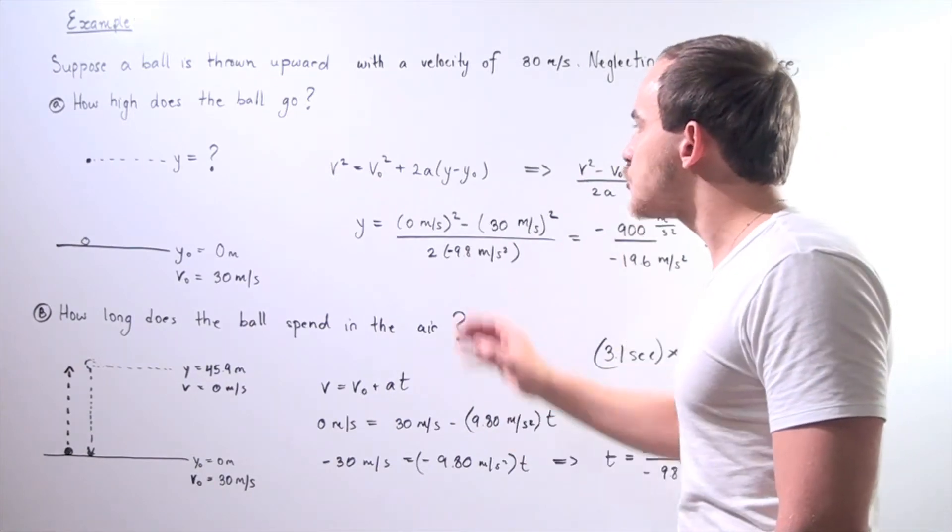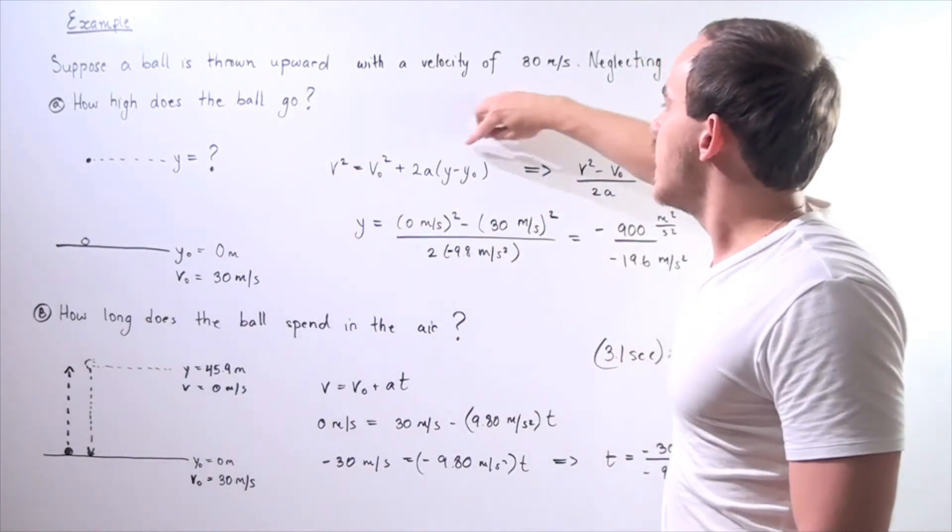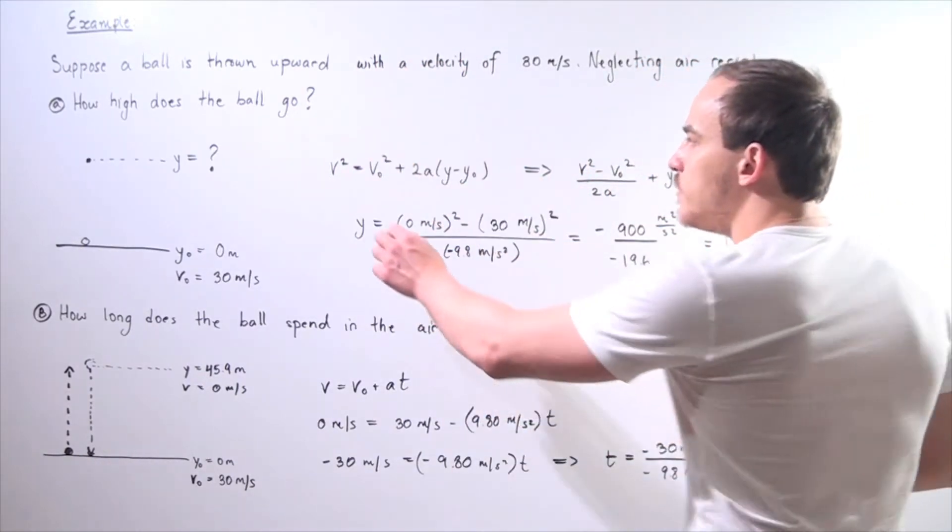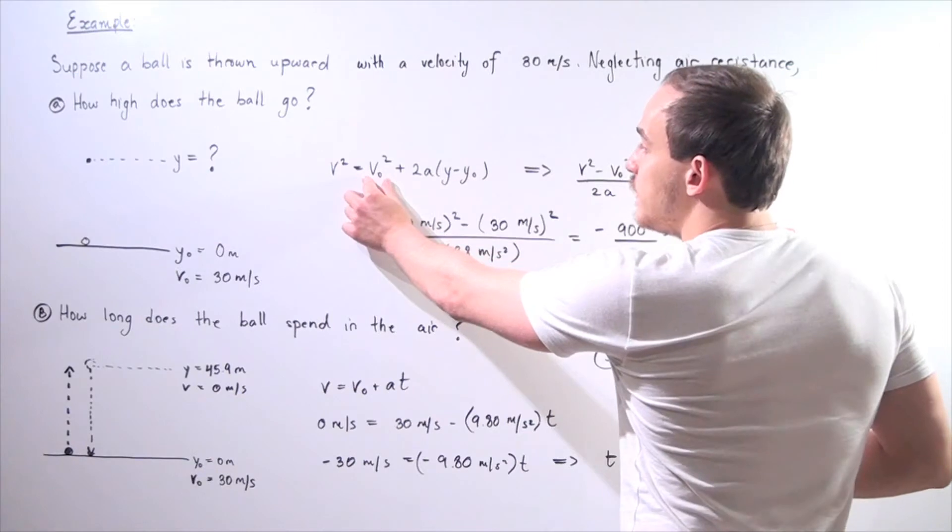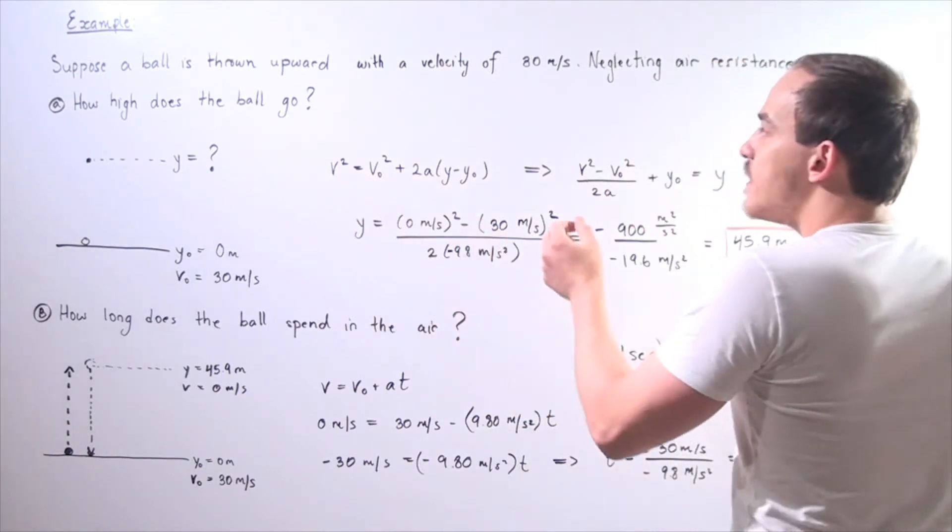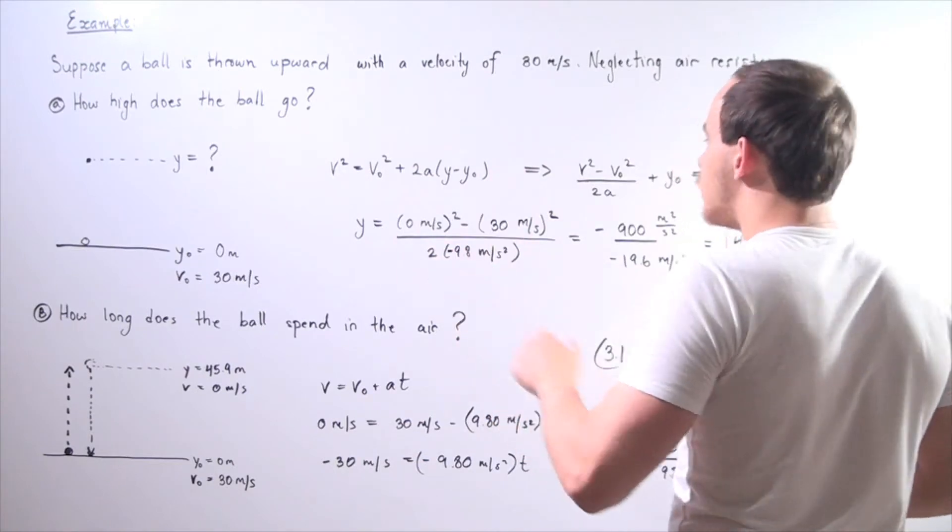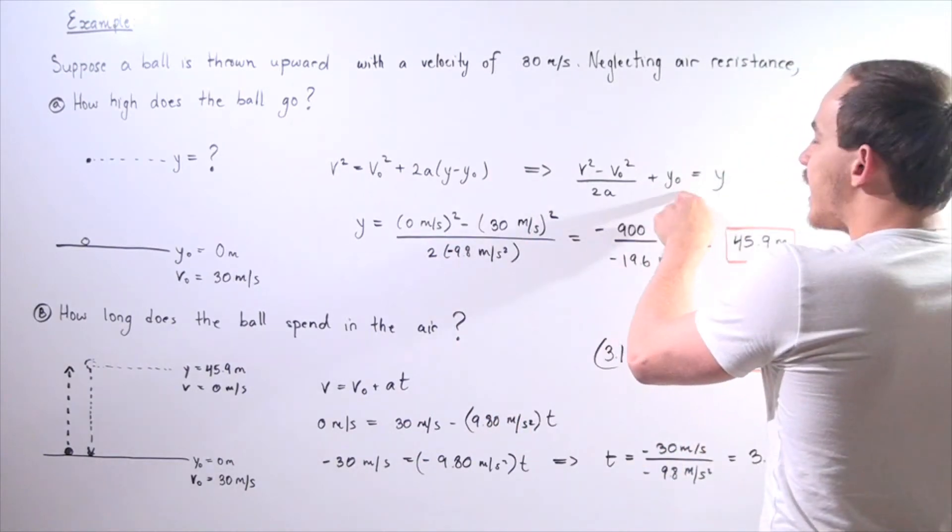Let's use this formula and rearrange this entire equation to get y on one side and everything else on the other side. So we bring our v initial, or v₀ squared, to this side. Then we divide both sides by 2a, and we bring over our y₀.